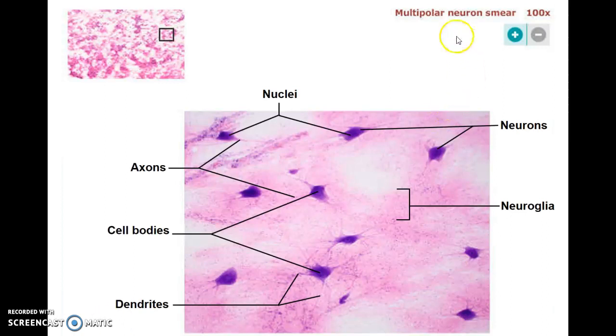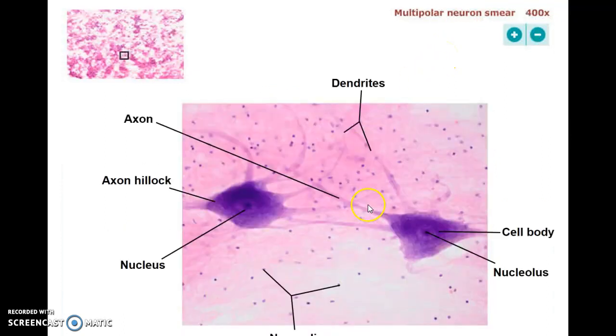This first slide is what we call a smear of some motor neurons, or multipolar neurons as they're called, from the ventral horn of the spinal cord. You can see all the cells on the slide here.